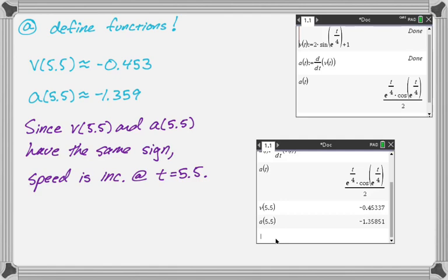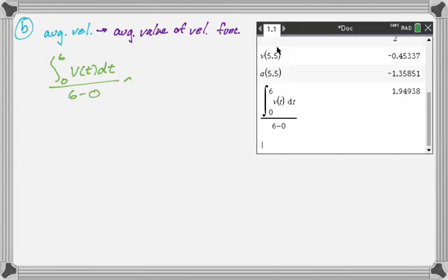The next question is find the average velocity of the particle for the time period from 0 to 6. So average velocity, when we have the velocity function, is going to be the average value of the velocity function. And that's going to be the integral divided by the interval. So the integral from 0 to 6 over 6 minus 0. And then that gives me, on the calculator, about 1.949. And again, there are no units, so that's our answer.